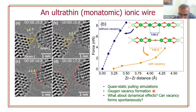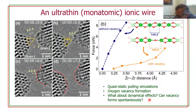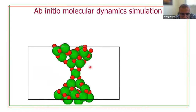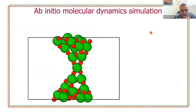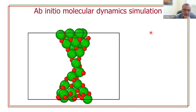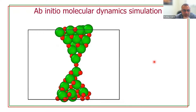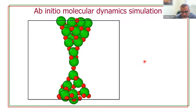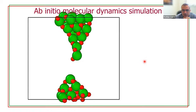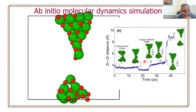It's also interesting to consider possible dynamic effects. For that, we did ab initio molecular dynamics simulations. We have a model bridge pulled apart, and you can see — green is zirconium, red is oxygen — that eventually it leads to formation of an oxygen vacancy at the bridge, switching from one site to another until it eventually breaks. We repeated these simulations many times and always see this process before breaking. We therefore have high confidence that the final process of wire breaking involves formation of an oxygen vacancy in the system.